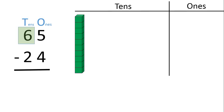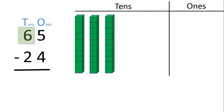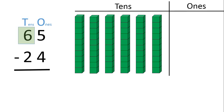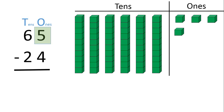We can show this using 6 tens blocks: 1, 2, 3, 4, 5, 6. Similarly, the number 5 in the ones place can be shown using 5 ones blocks: 1, 2, 3, 4, 5.